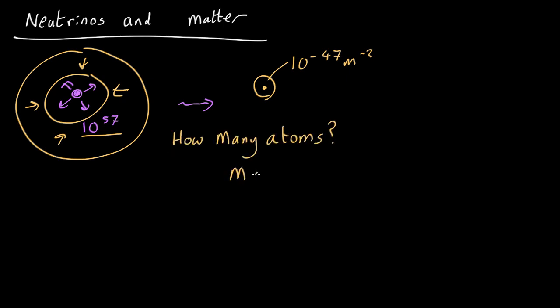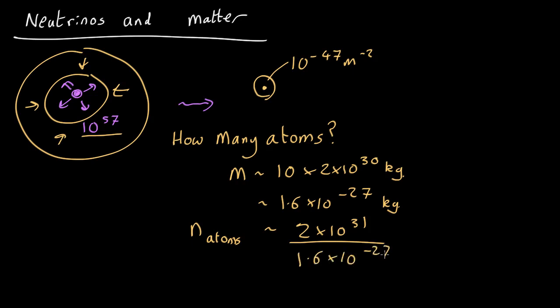Well, it's got a mass of around 10 solar masses. That's 10 times the mass of the Sun, 2 by 10 to the 30 kilograms. And it's mostly hydrogen. The mass of one hydrogen atom is about 1.6 by 10 to the minus 27 kilograms. So number of atoms is going to be about the total mass, so that's 2 by 10 to the 31 all over 1.6 by 10 to the minus 27, which comes out as roughly 10 to the 58 atoms.